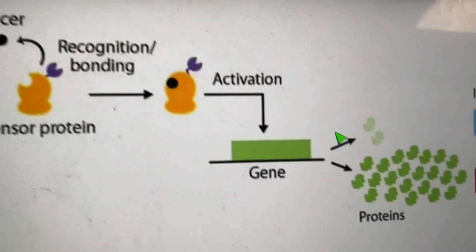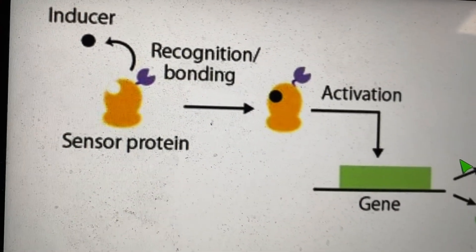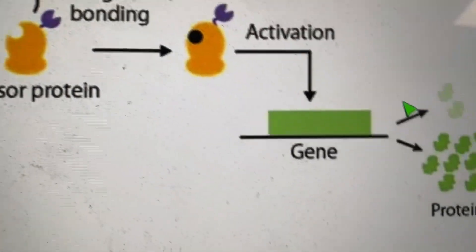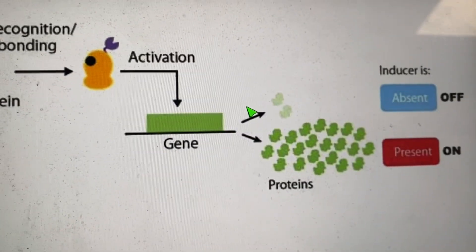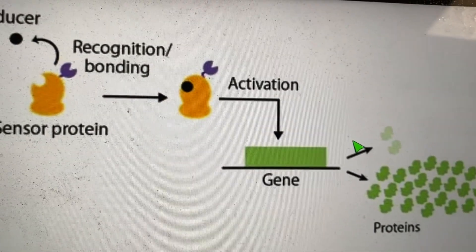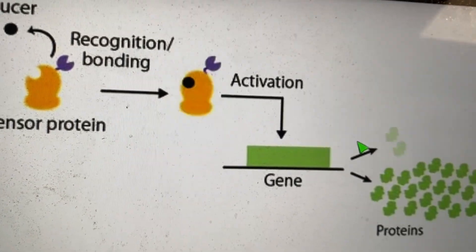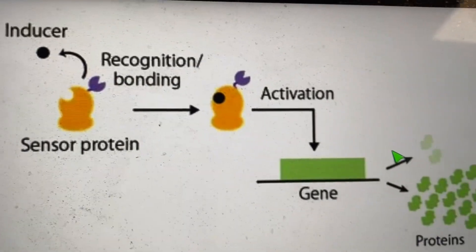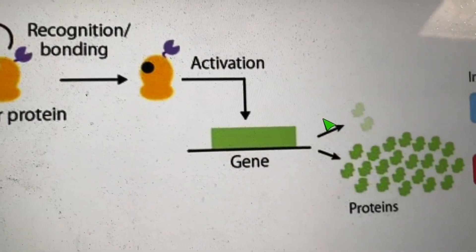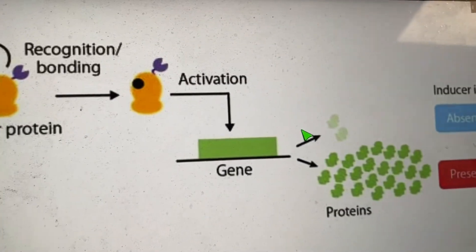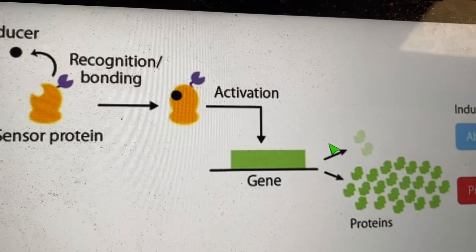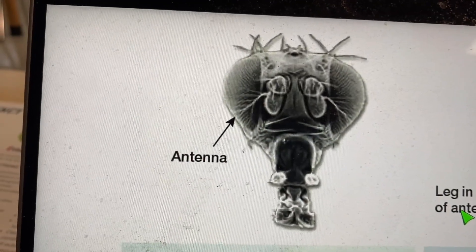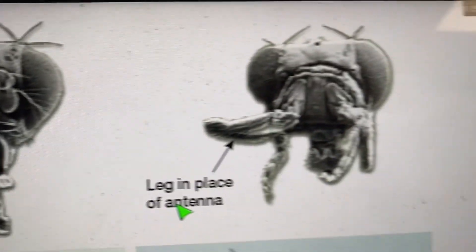Gene switches are usually proteins called inducer proteins, and they bind to other proteins that activate genes to make new proteins — like a light switch. It takes one gene switch to trigger the next: one gene makes a switch protein, which makes another switch protein, and so on. If you switch them at the right time, like turning on all the lights in order, you get a baby. Switch them at the wrong time and you could get something weird, like a leg growing out of your face.